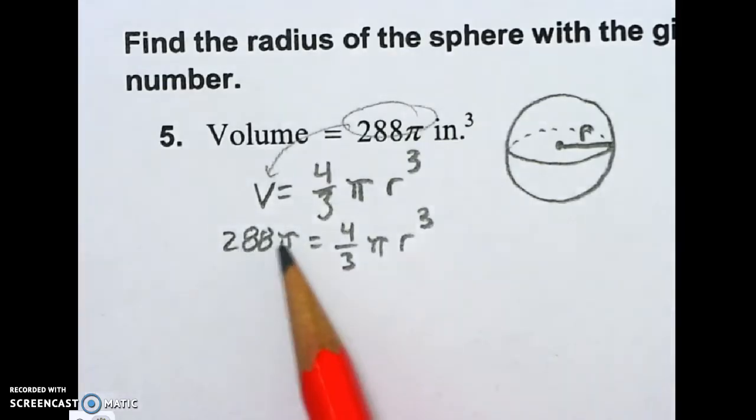If you're wondering what 288π means, it's just the 288 and the π have not been multiplied together yet. So that's all that's happened there.